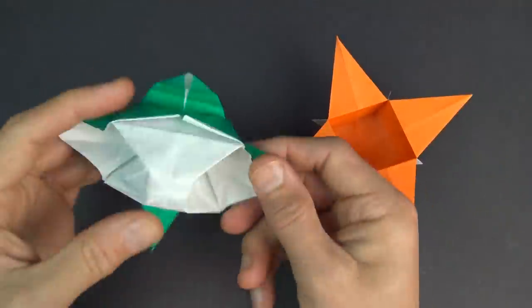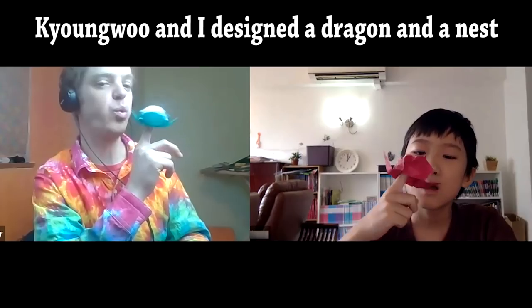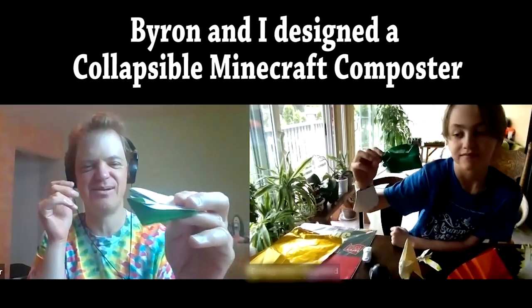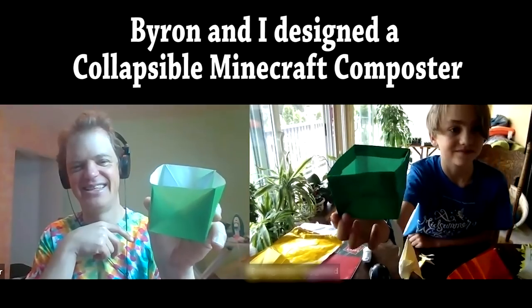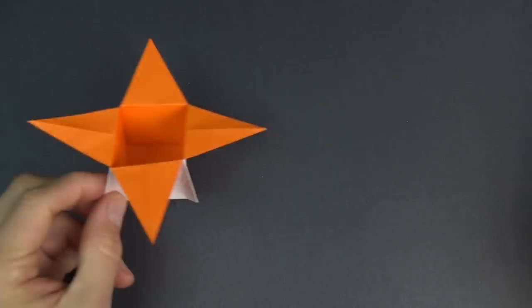But the inspiration to do so was from a couple of models: one, this spinning star UFO which was designed with my student Kyung Woo during a zoom tutoring session, and this Minecraft composter, the collapsible composter which was designed with my student Byron during a zoom session. And now I'm going to show you how to fold this.